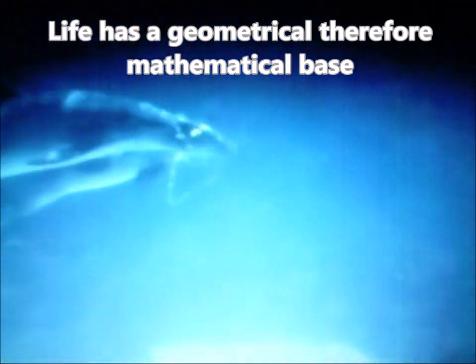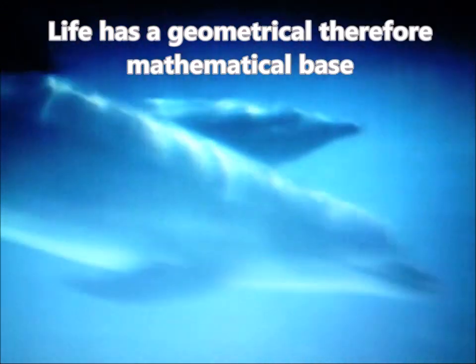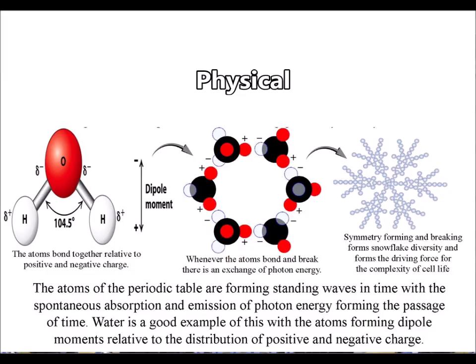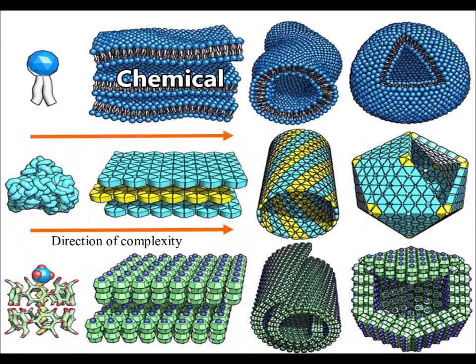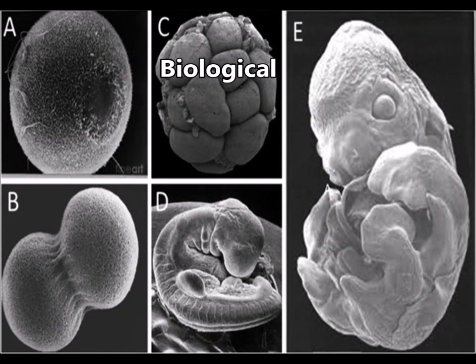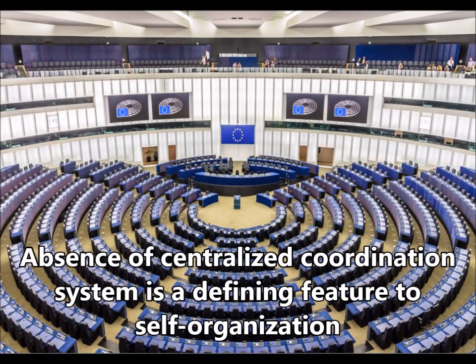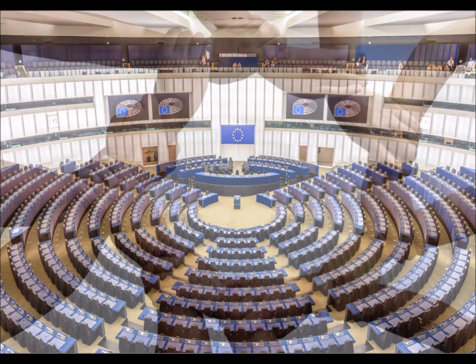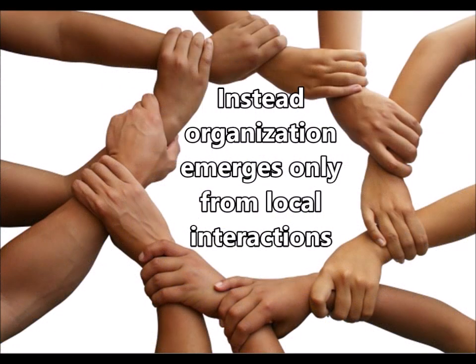Self-organization is a universal process seen in all kinds of distributed systems such as physical, chemical, and biological. Absence of a centralized coordination system is a defining feature of self-organization. Instead, organization emerges only from local interactions.